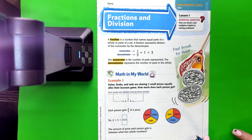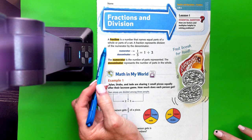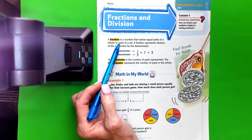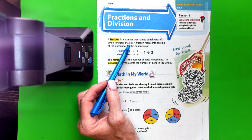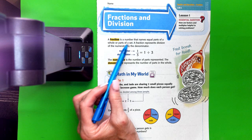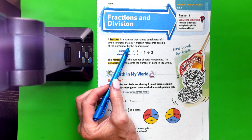Alright, this is Chapter 8, Lesson 1, Fractions and Division. A fraction is a number that names equal parts of a whole or parts of a set. A fraction represents division of the numerator by the denominator.